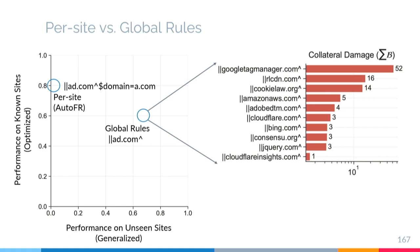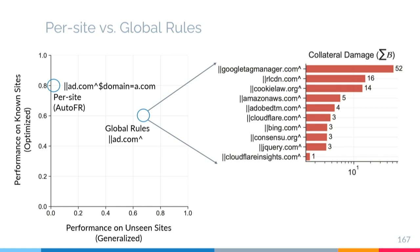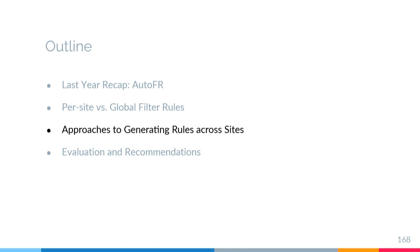So both per-site rules and global rules have their strengths and weaknesses. Now let me outline approaches to generating rules across sites, considering both per-site and global rules.